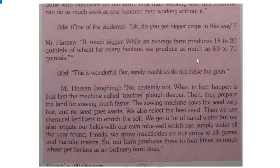A quintal is 100 kilograms, and a hectare is a unit of land approximately 2.4 to 3 acres. So while an average farm produces 15 to 20 quintals of wheat per hectare, this model farm produces about 3 to 4 times more — that is, 62 to 70 quintals per hectare.